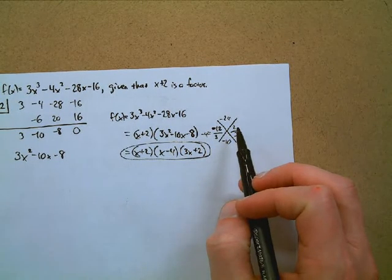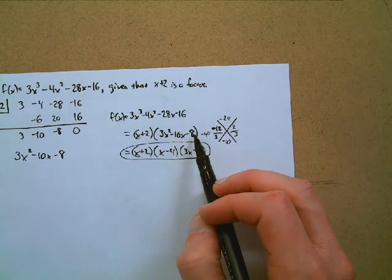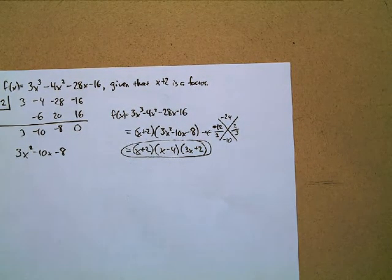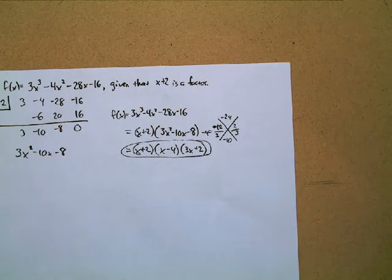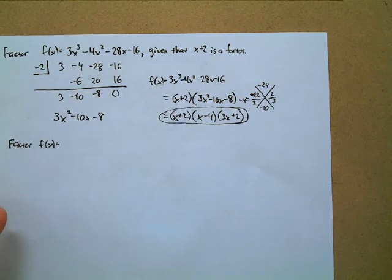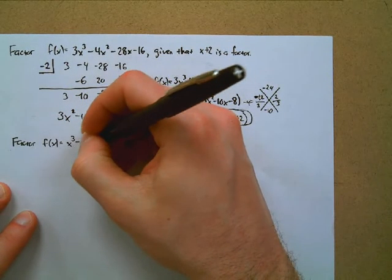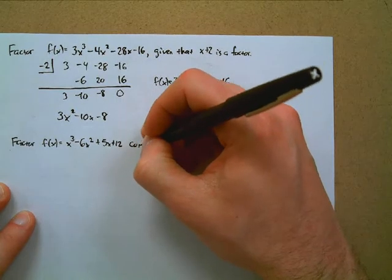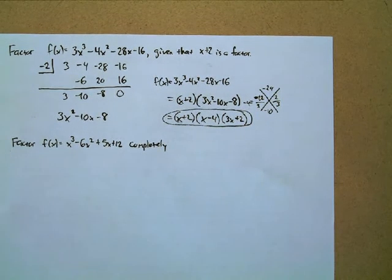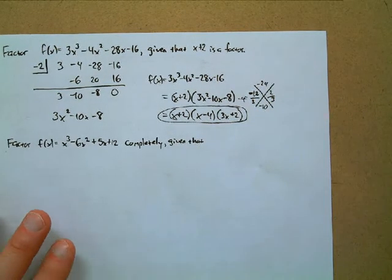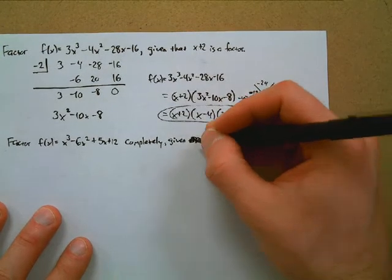Now let's try one: factor f(x) = x³ − 6x² + 5x + 12 completely, given that x − 4 is a factor.